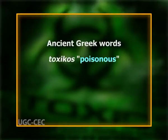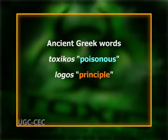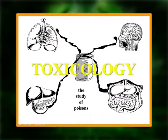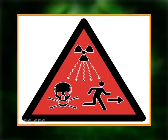The term toxicology is derived from the ancient Greek word 'toxicos' meaning poisonous and 'logos' meaning principle, and has been classically defined as the science of poisons. Over time, this science involved a number of disciplines of life and physical sciences to understand the adverse effects of harmful substances and their mechanisms, changing the definition of toxicology to the multidisciplinary science that studies the harmful effects of chemical, biological, and physical agents in biological systems.